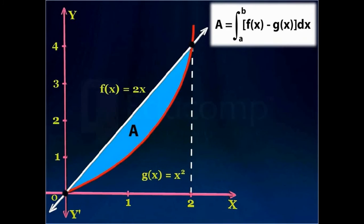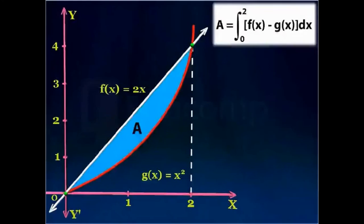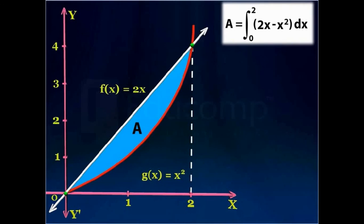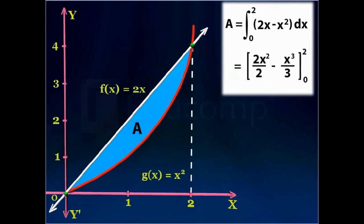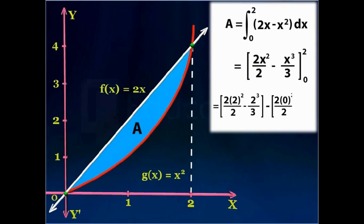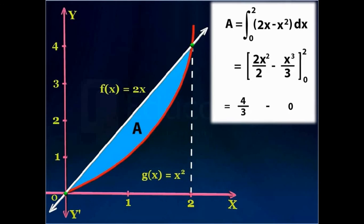The value of x at the points of intersection of the two curves gives the value of a and b. The lower value of x represents the value of a and the higher value represents the value of b. Now substituting 2x for f of x and x square for g of x, and then solving the definite integral, we get four upon three square units. This is how we can find the area enclosed between any two functions of x.